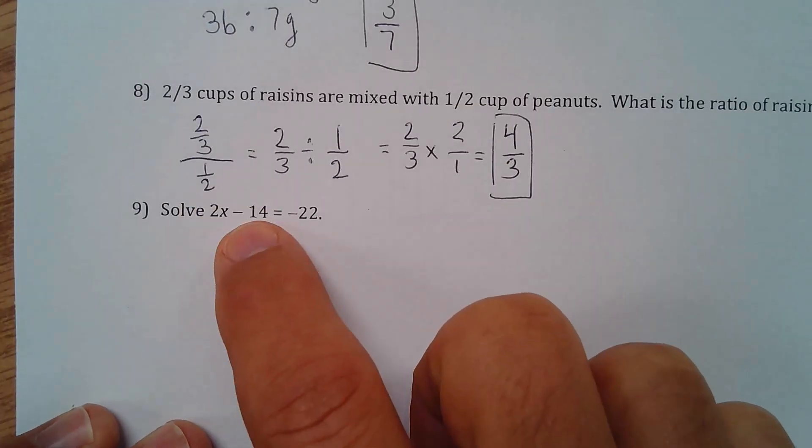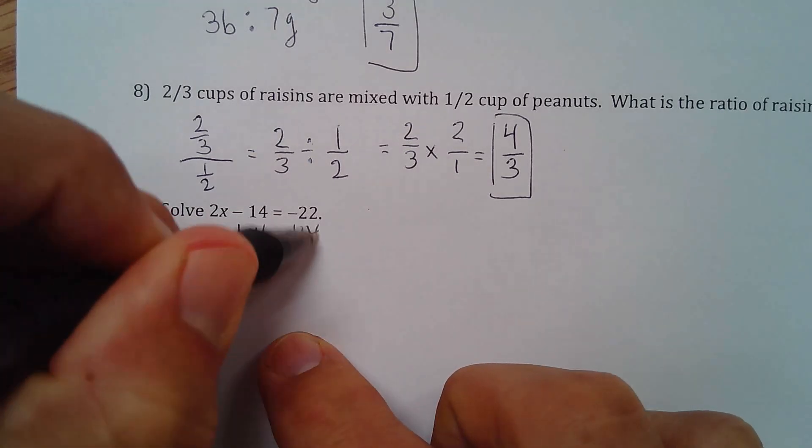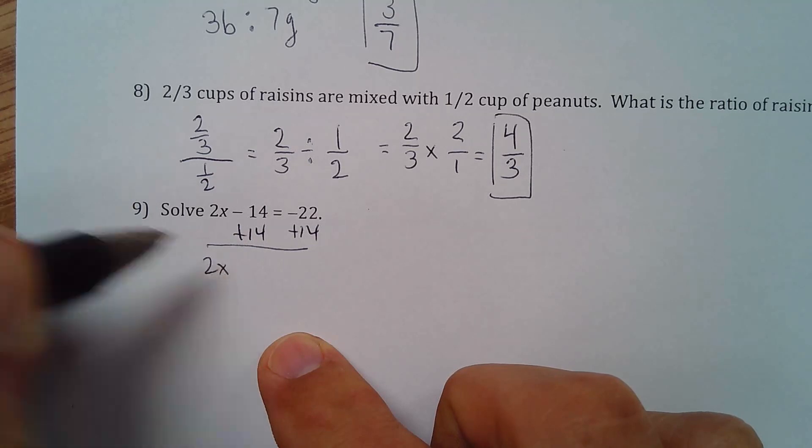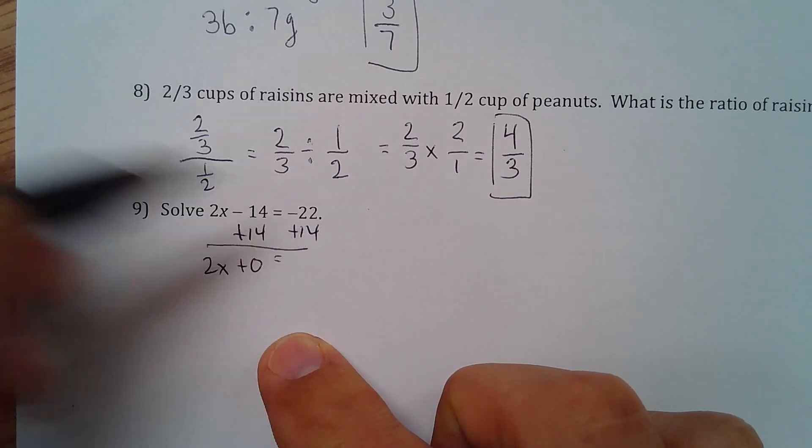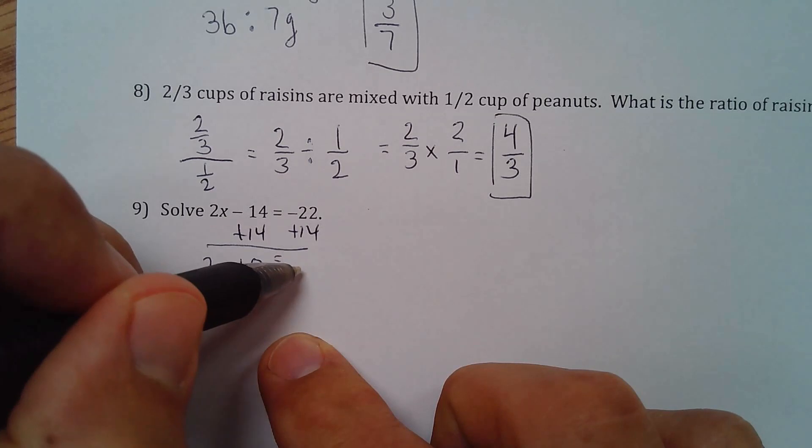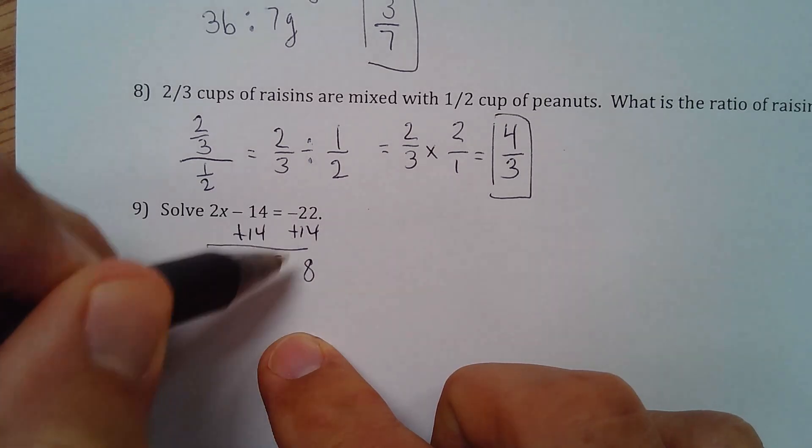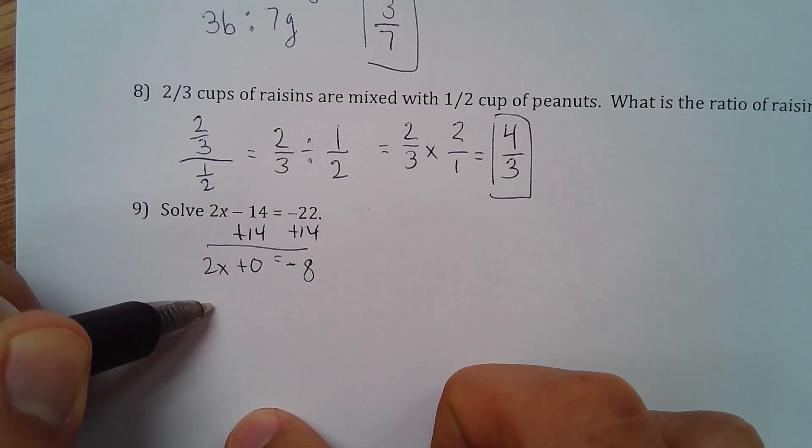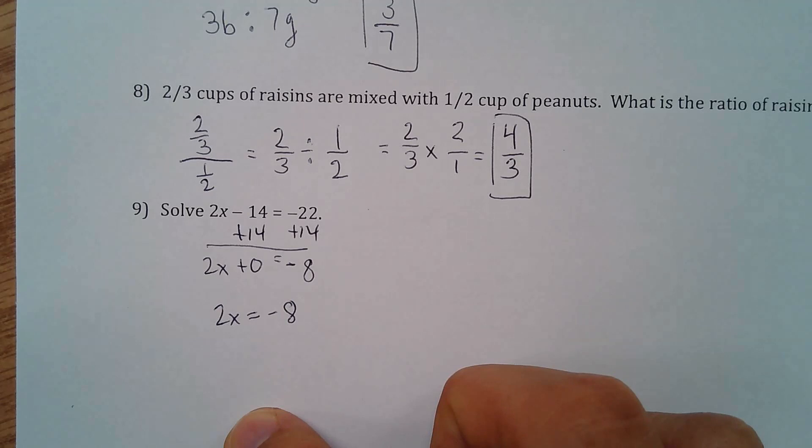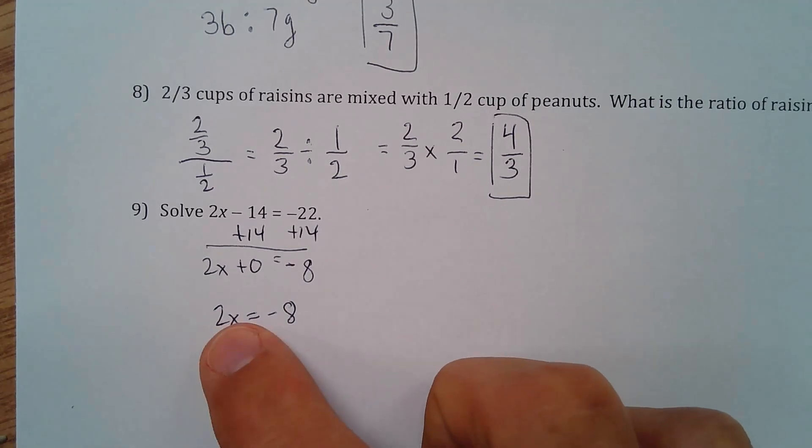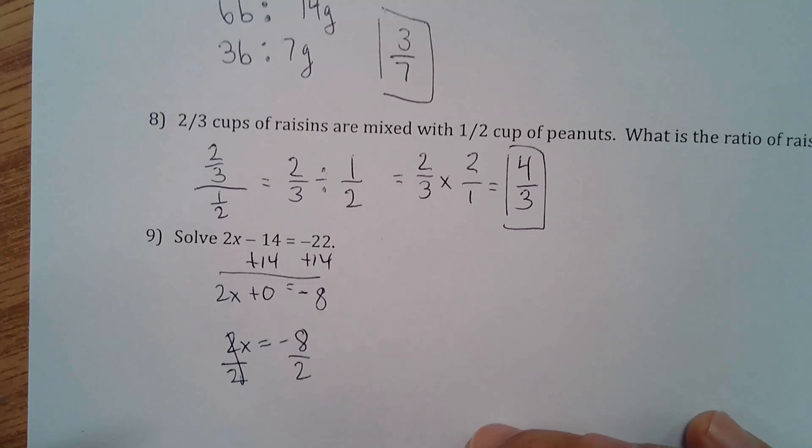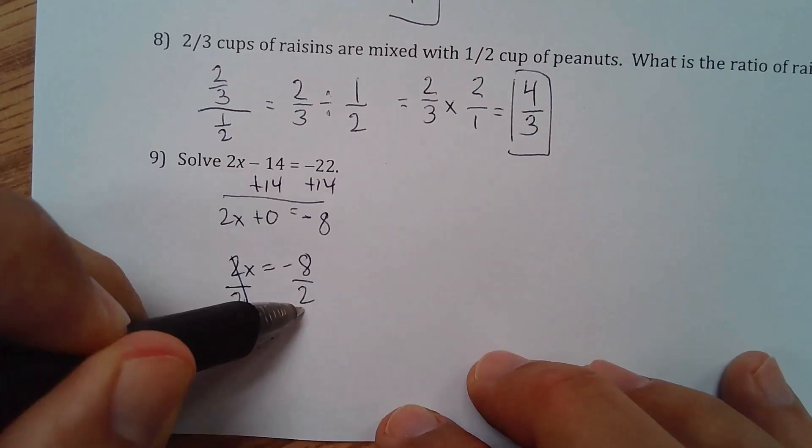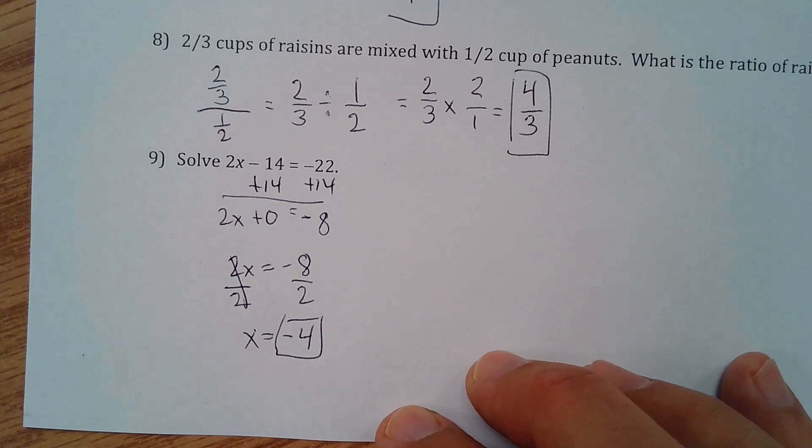Okay. Solving this is a two-step equation. The first step is we're going to get rid of the minus 14 by adding 14. And we have 2x. This is 0. I guess I could write plus 0. And then negative 22 plus 14. These are different signs. You have to subtract them. That's going to be 8, I believe. And there's more negatives than positives. So it's going to be negative 8. I'll clean this up a little bit. And we have 2x equals negative 8. Finally, I'm going to divide both sides by 2. Because I'm multiplying by 2, I have to use that inverse operation of dividing by 2. These cancel. And I get x equals negative 8 divided by 2 is negative 4.